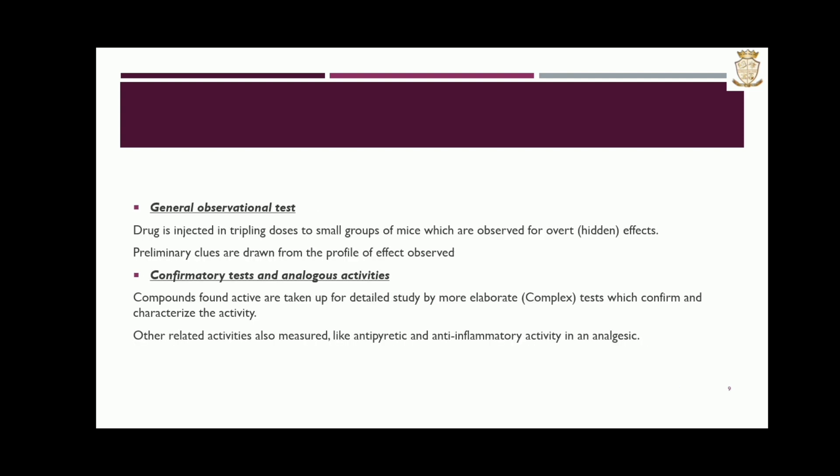General observational test: the drug is injected in tripling doses to small groups of mice, which are observed for hidden effects. Preliminary clues are drawn from the profile of effects observed. Confirmatory test on analogous activities: components found active are taken up for detailed study by more elaborate tests which confirm and characterize the activity. Other related activities are also measured, like antipyretic and anti-inflammatory activity in an analgesic.